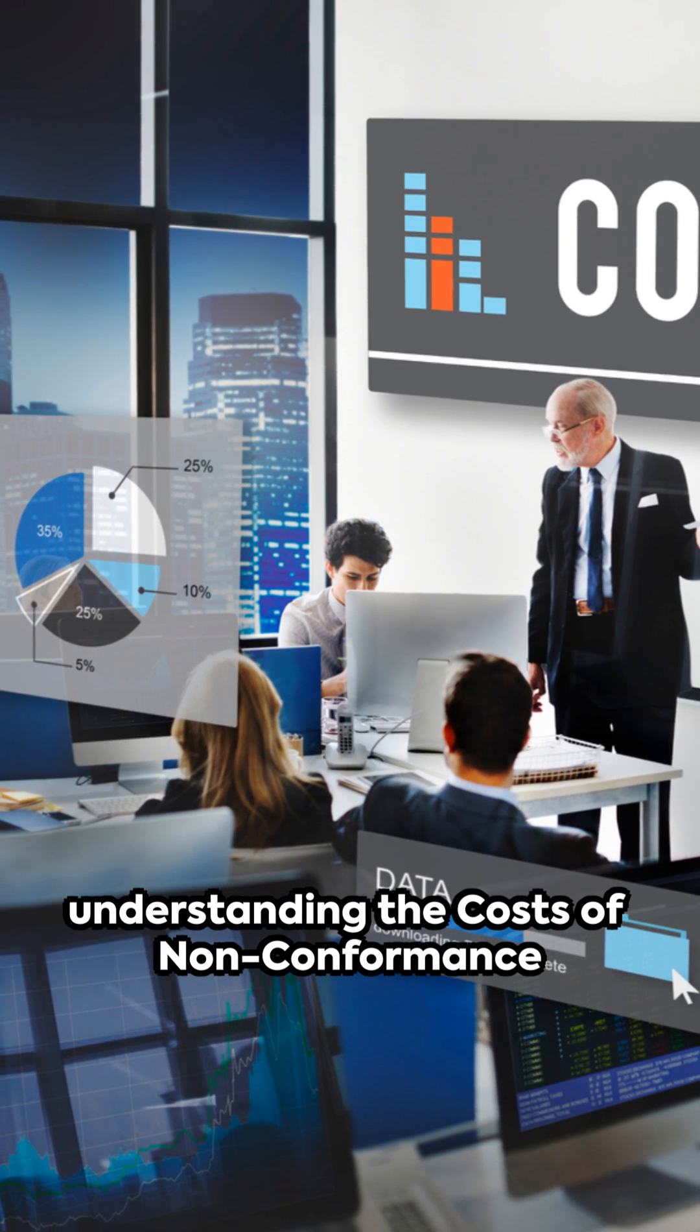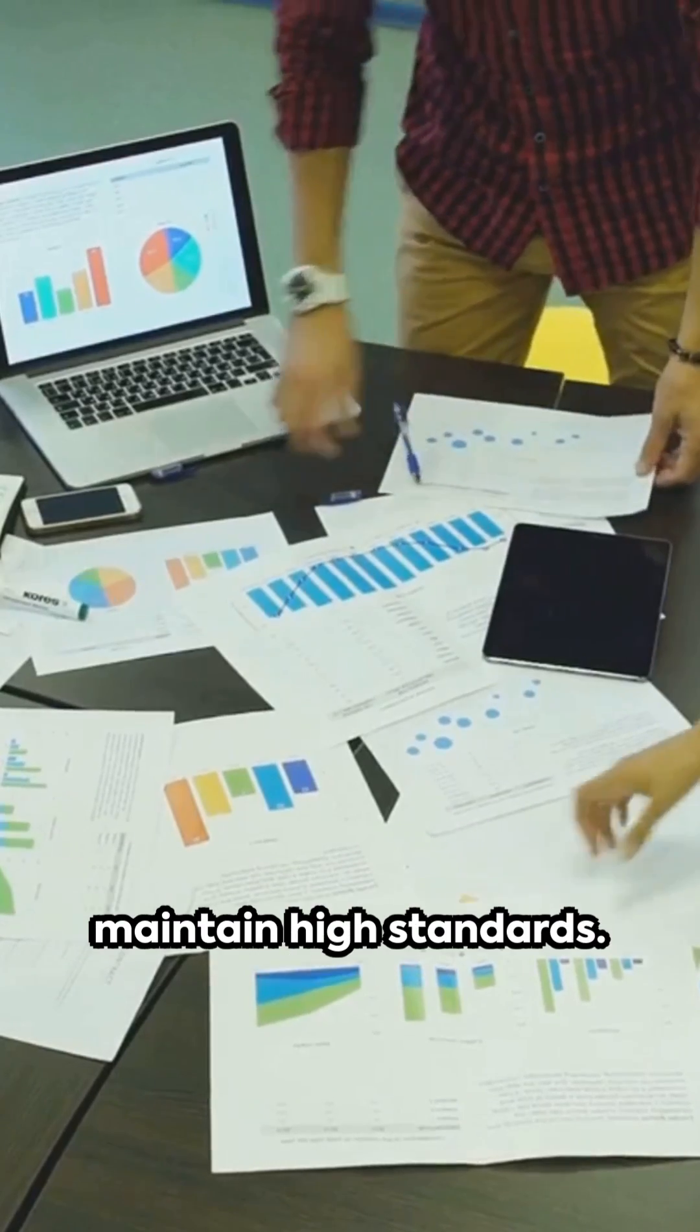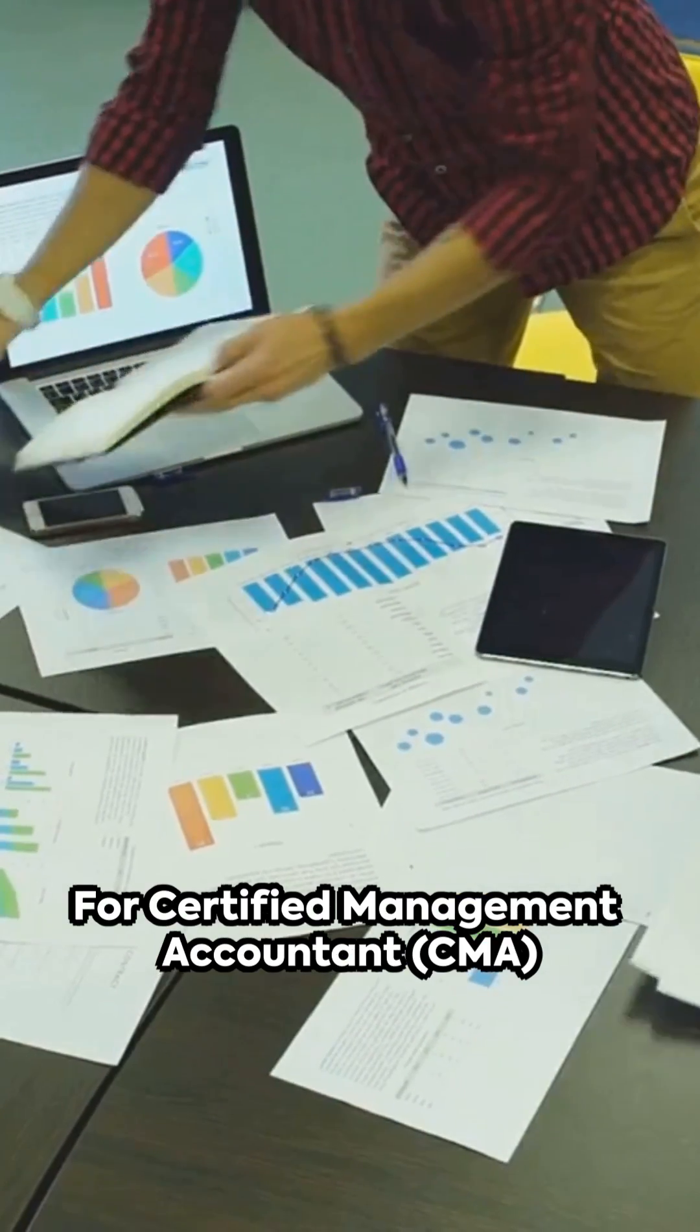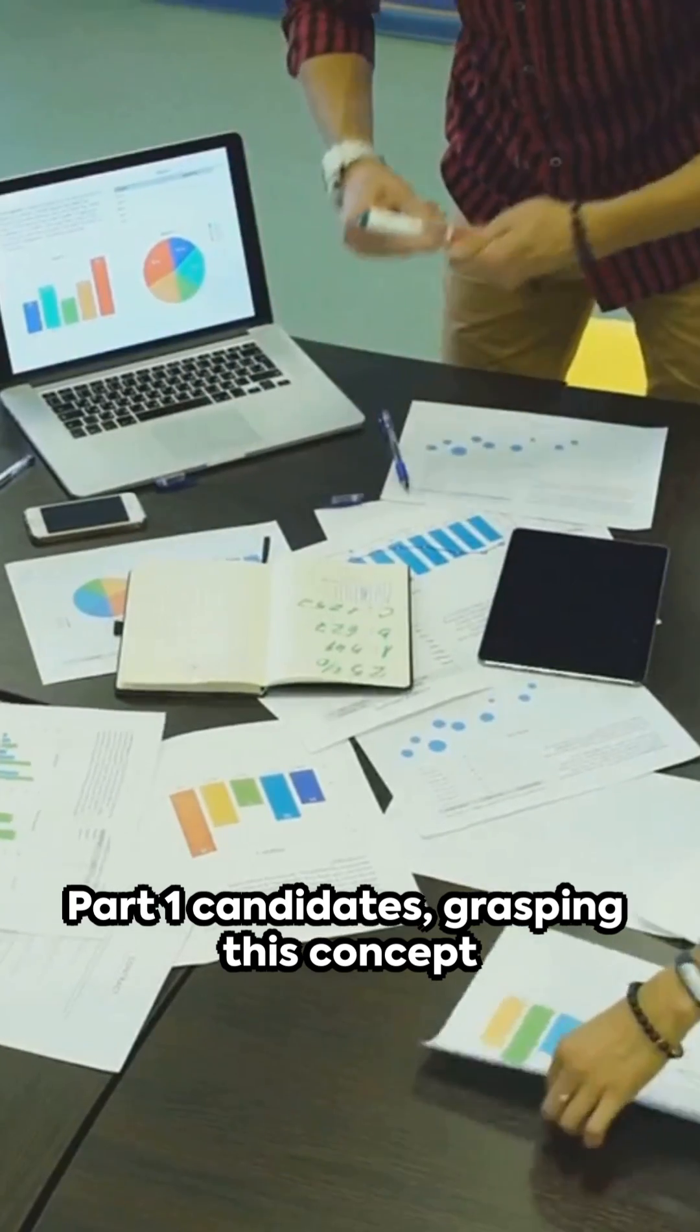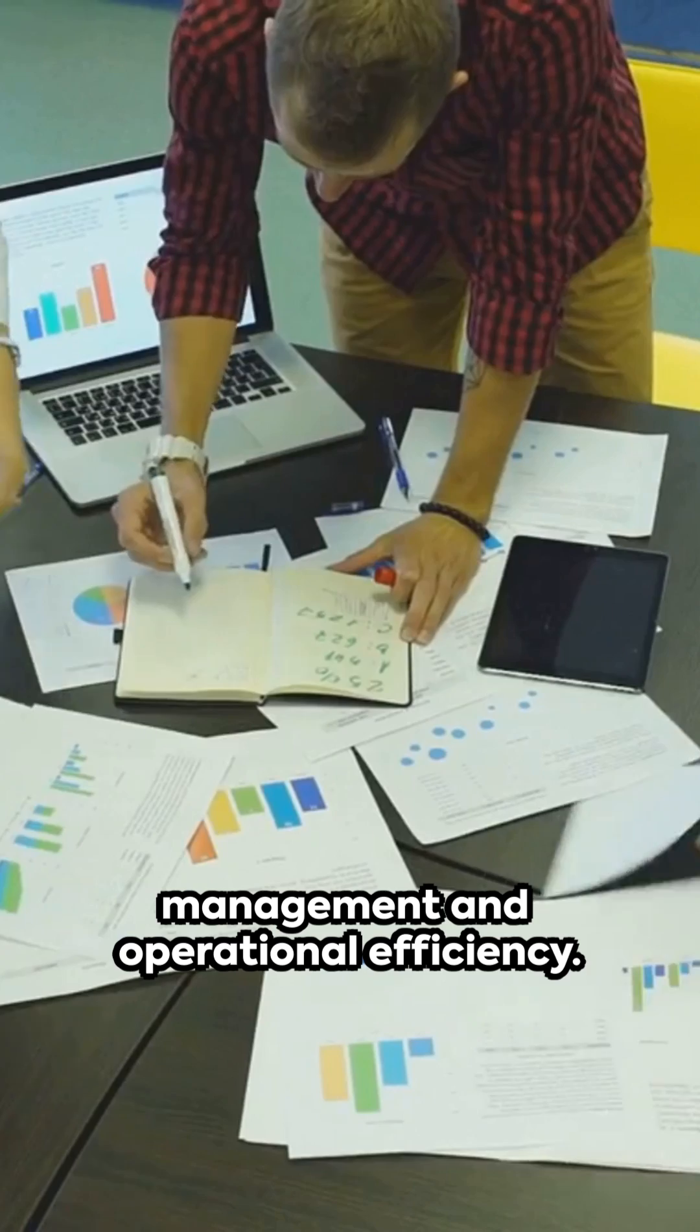In the world of quality management, understanding the costs of non-conformance is crucial for organizations aiming to maintain high standards. For Certified Management Accountant, CMA, Part 1 candidates, grasping this concept is vital as it ties directly into cost management and operational efficiency.